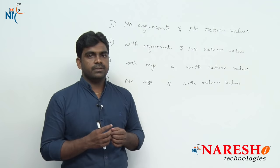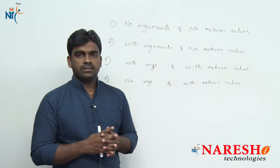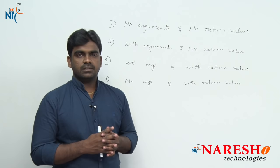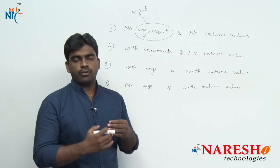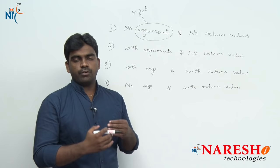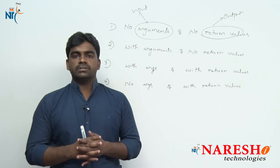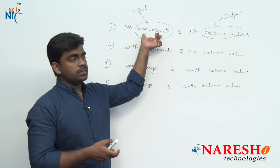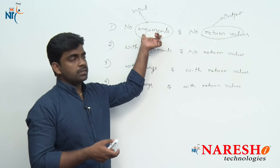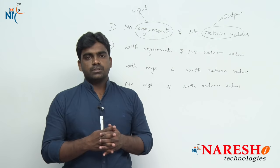Before discussing all these four classifications, we need to remember once again what is a function. A function is a set of instructions — it takes input. Arguments are called input. After processing the input with predefined logic, it will produce output. That return value we can call output.